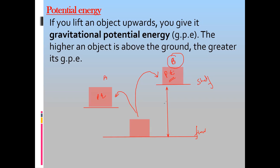That's right — case B has greater potential energy because it is raised to a greater height. The height from the ground is greater, so it stores more potential energy. Force and energy are different things: when you apply force and move the object a certain distance, the object stores something we call energy — the ability to do work.